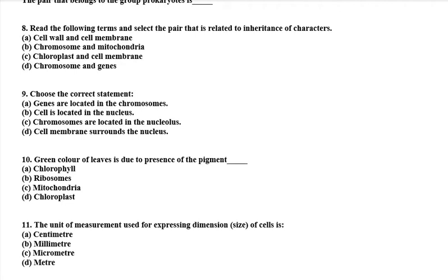Eighth question: select the pair that is related to inheritance of characters. The answer is chromosomes and genes — that is option D. Chromosomes and genes are responsible for inheritance.